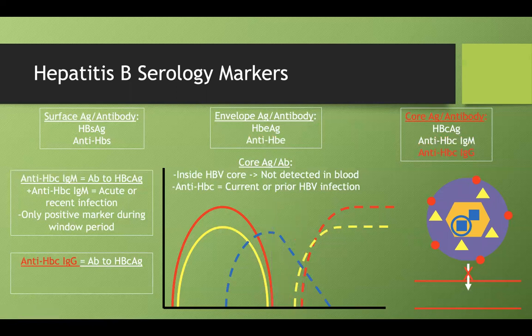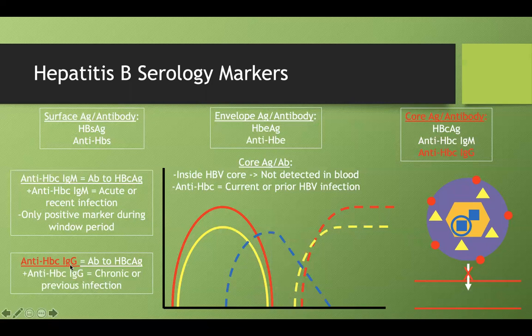The anti-HBc IgG antibody indicates either a resolved infection or a chronic infection — since hep B, unlike hep A, can cause chronic disease. If you see a positive core anti-HBc IgG, you need to determine whether it's a chronic infection or a resolved one.